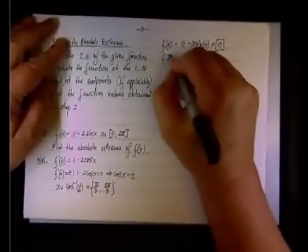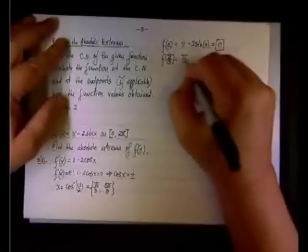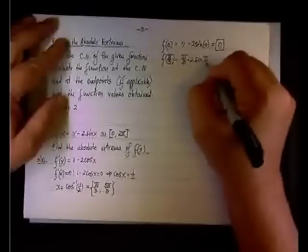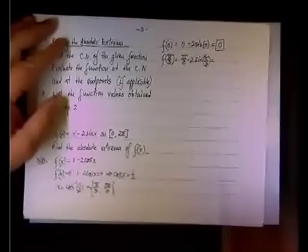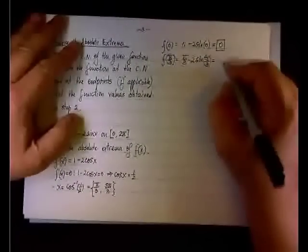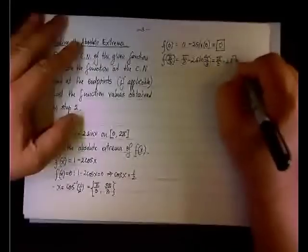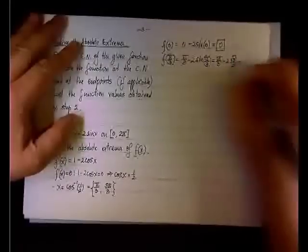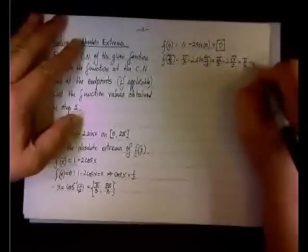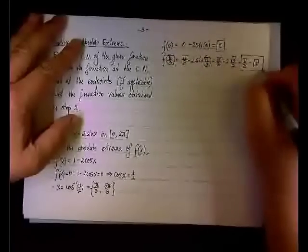Next will be f of pi over three. So the function is x minus two sine x, so it will be pi over three minus two sine of pi over three. Now, if cosine pi over three equals one half, sine of pi over three equals square root of three over two. So we are looking at pi over three minus two times square root of three over two, or pi over three minus square root of three.